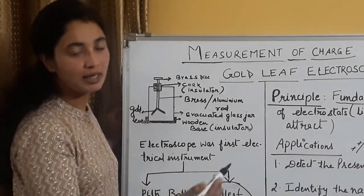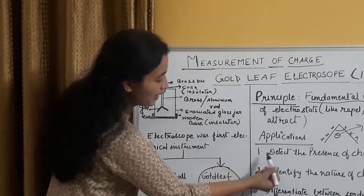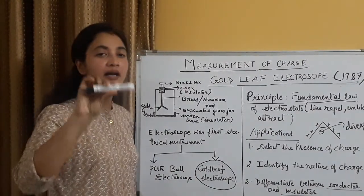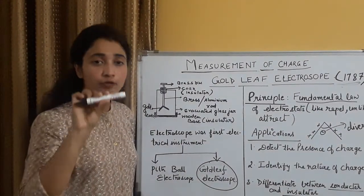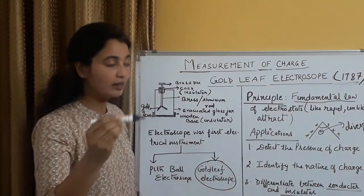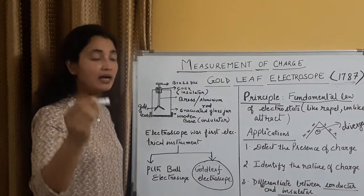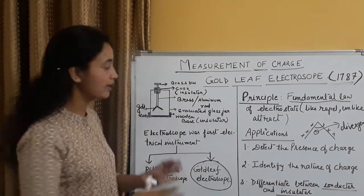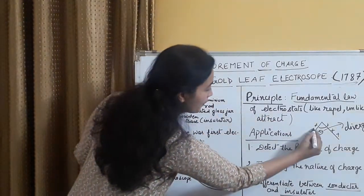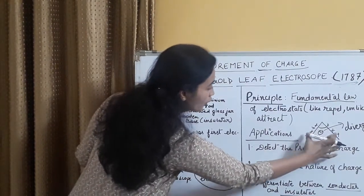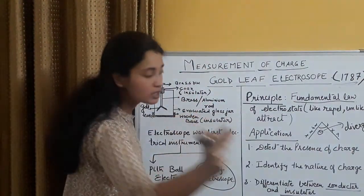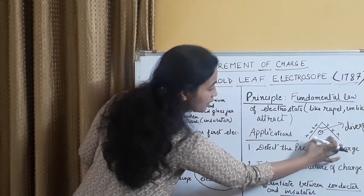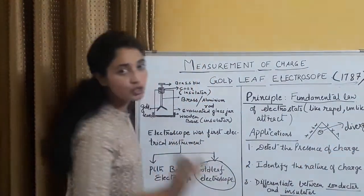Applications mein, ki hum ise kyun use karte hai, ya kahan use karte hai. Sabse pehle, to detect the presence of charge. Suppose, ye koi ek rod hai, mujhe check karna hai, ki ye charged hai, ya nahi hai. I have to detect whether it is charged or not. In such a situation, ye charged hai ya nahi detect karne ke liye, hame pehle se gold leaf electroscope ko kuch charge de ke rakhna hai. Suppose, hum ne iske jo leaves hai, hum ne use pehle se kuch positive charge diya hua hai, aur dono leaves pe positive charge hai, both the leaves are positive, obviously they will repel, and due to repulsion, there is divergence.